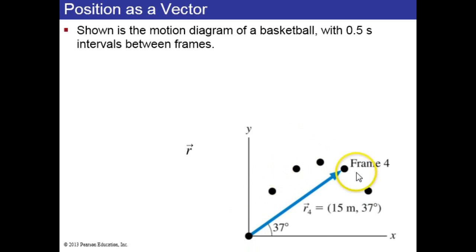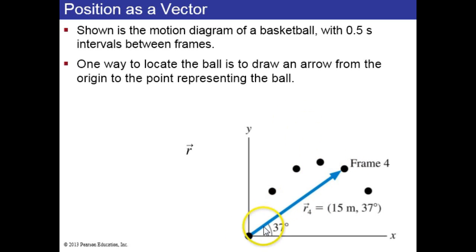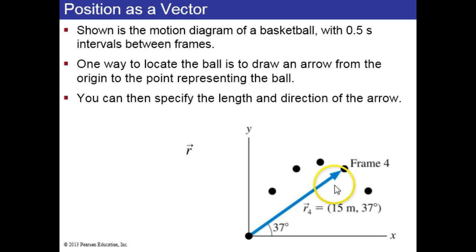Here's a motion diagram in two dimensions. We have the x-axis and the y-axis. It's a basketball, and we're told that there's 0.5 second intervals between frames. One way to locate the ball is to draw an arrow from the origin where x and y equals zero to the position. This arrow shows the position of the ball at frame 4. The length of the arrow is 15 meters and the direction of the arrow is specified by this angle between the arrow and the x-axis.